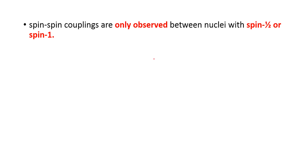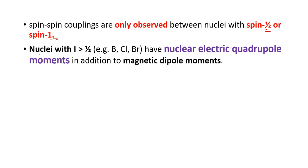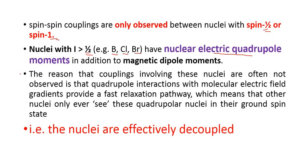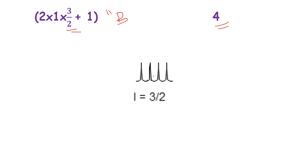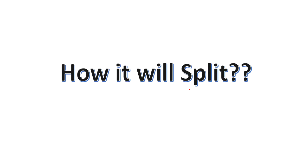What about the splitting due to boron-11? Spin couplings of the Pascal's triangle type are mainly observed for spin-1/2 and spin-1 nuclei. Nuclei with I greater than 1/2 — like boron, chlorine, and bromine — have a nuclear electric quadrupole moment in addition to the magnetic dipole. This effectively decouples them, so boron-11 with I=3/2 splits into 4 equal peaks with a 1:1:1:1 pattern.